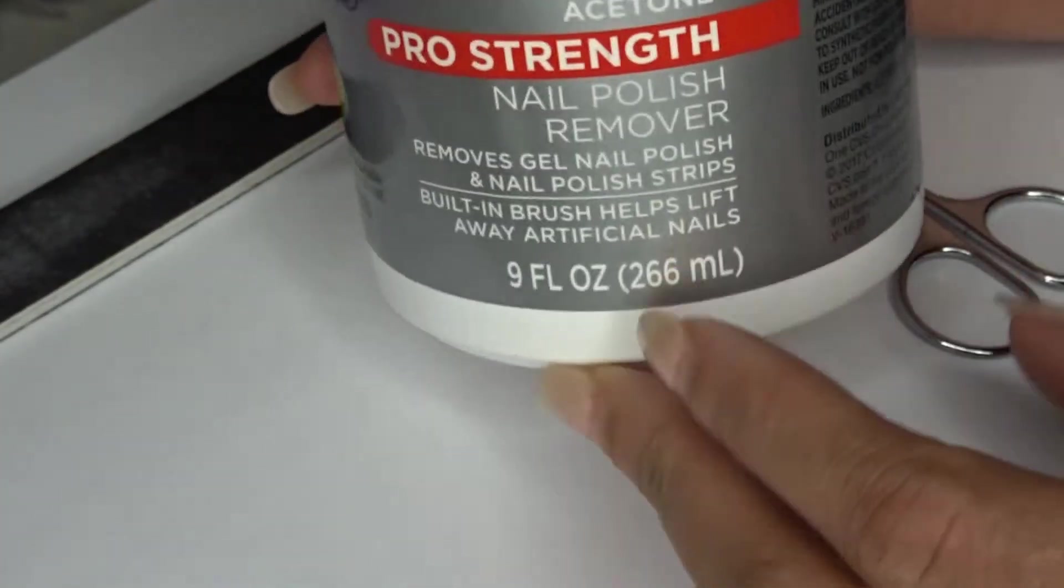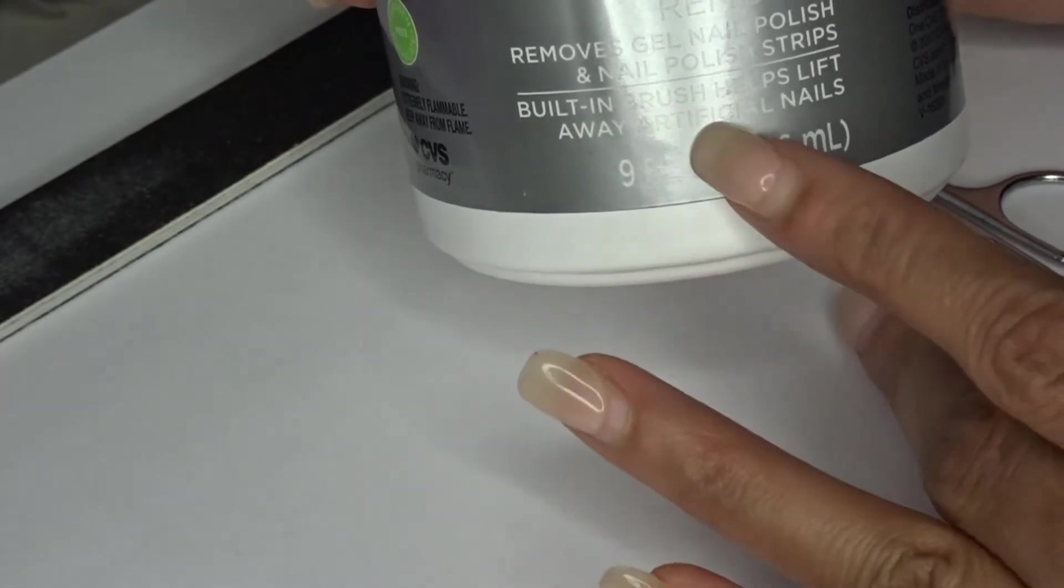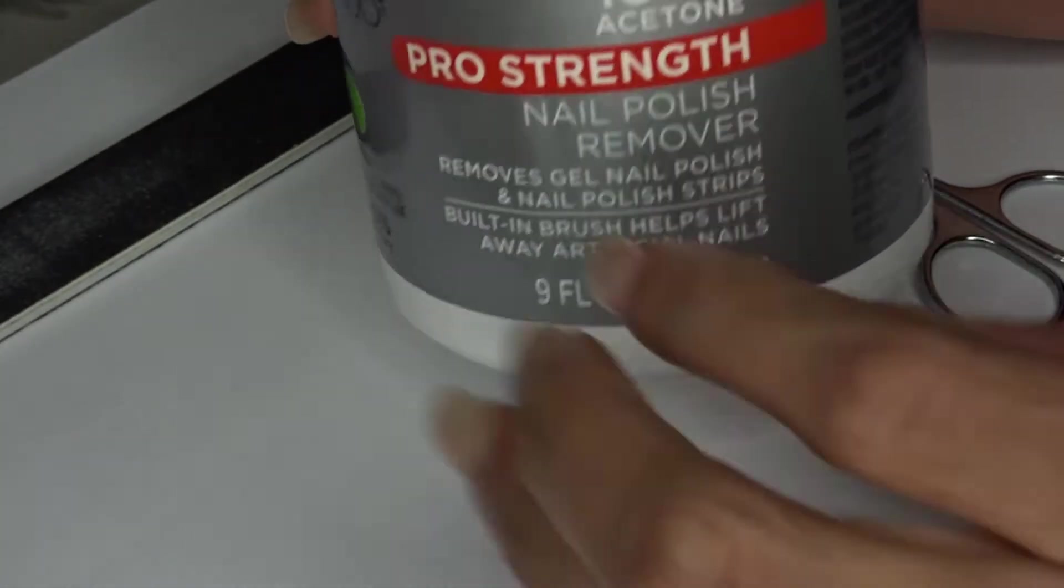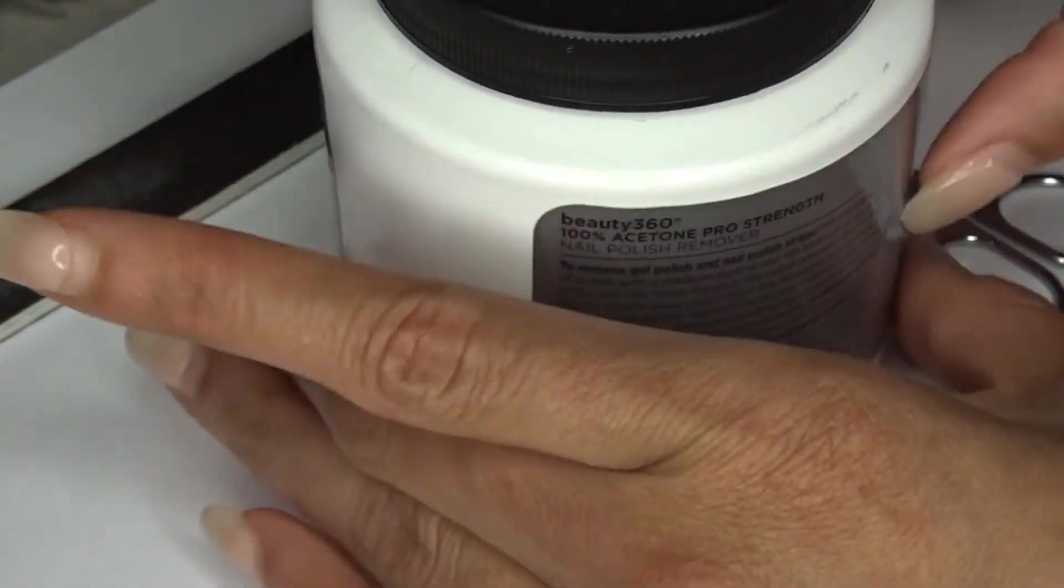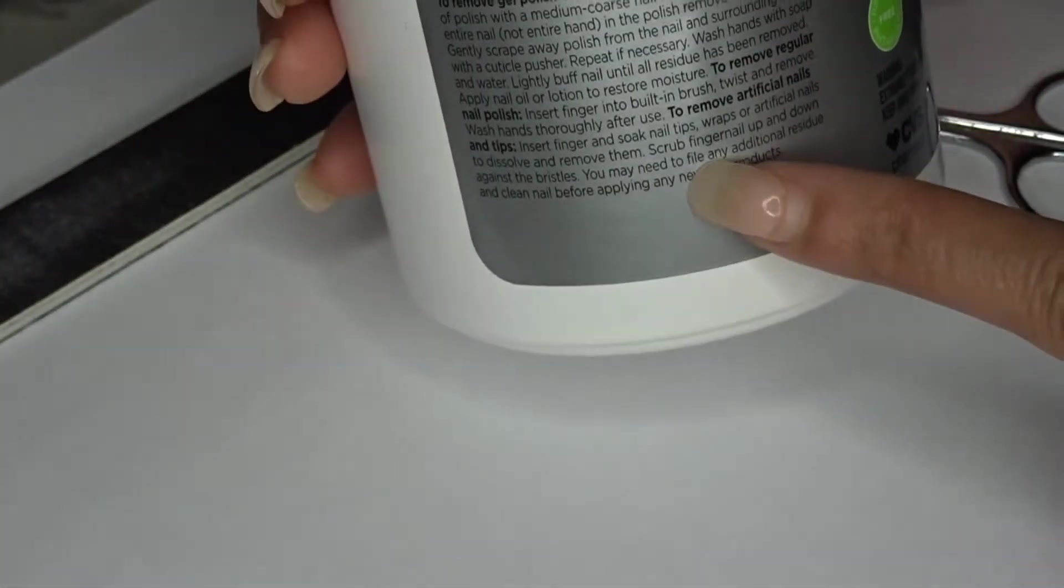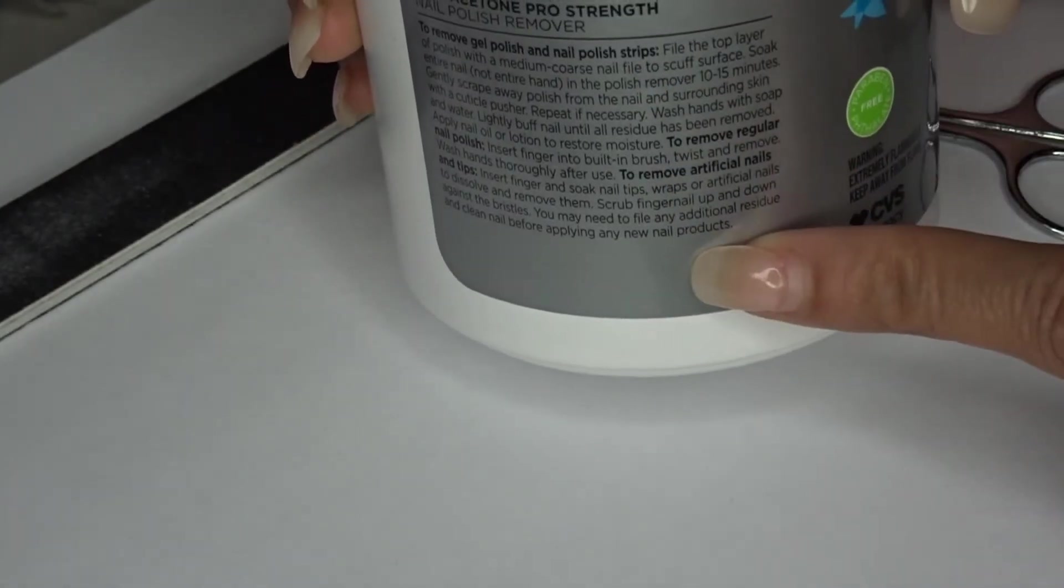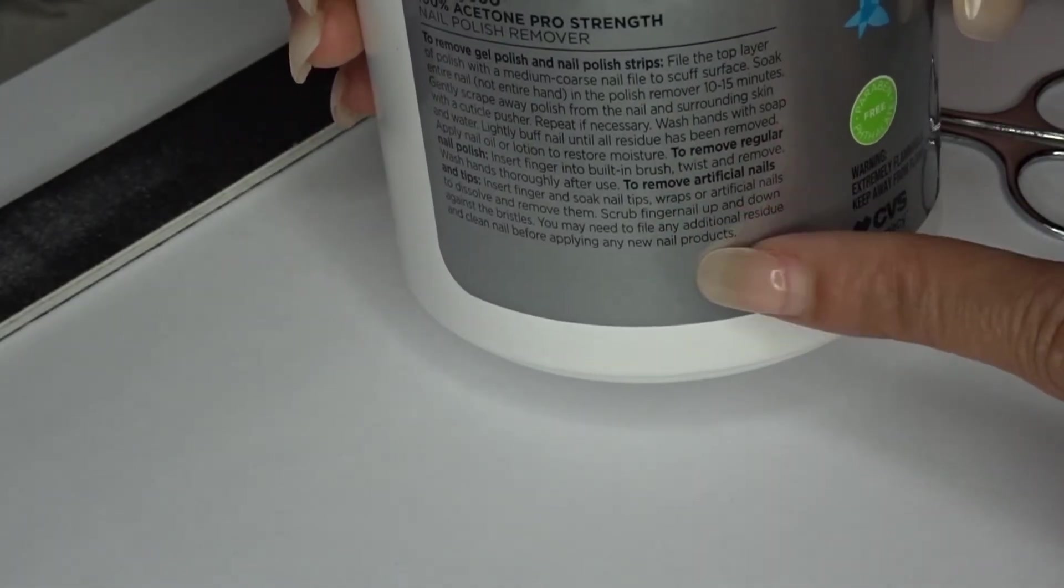And also, if you ever want to double check, it always says on here that it will help to lift artificial nails or it will say something along those lines. As well as this one on the back also tells you how to use it to remove artificial nails. So these are just some key things to look out for if you plan on doing this at home.